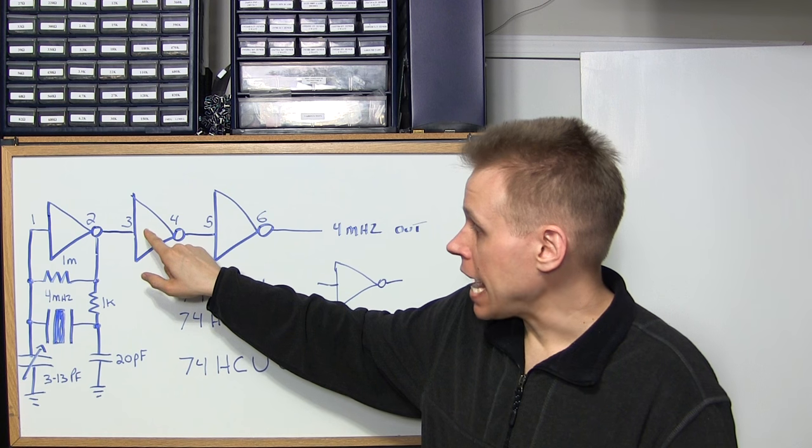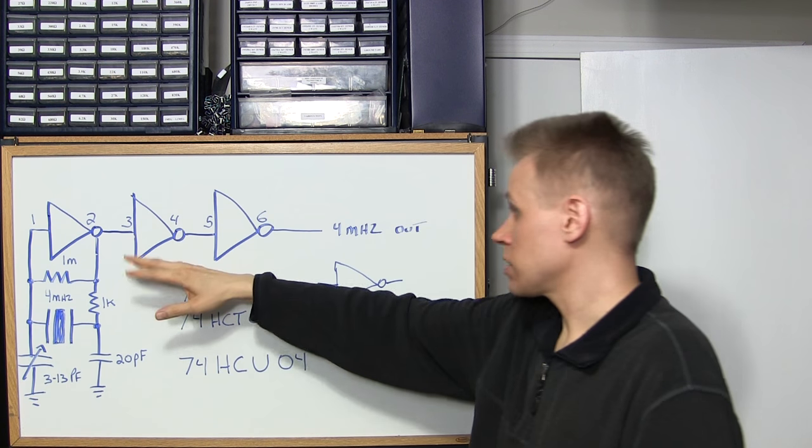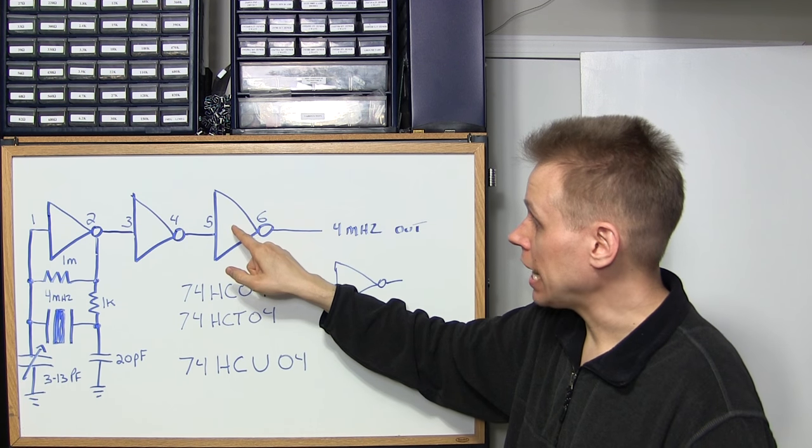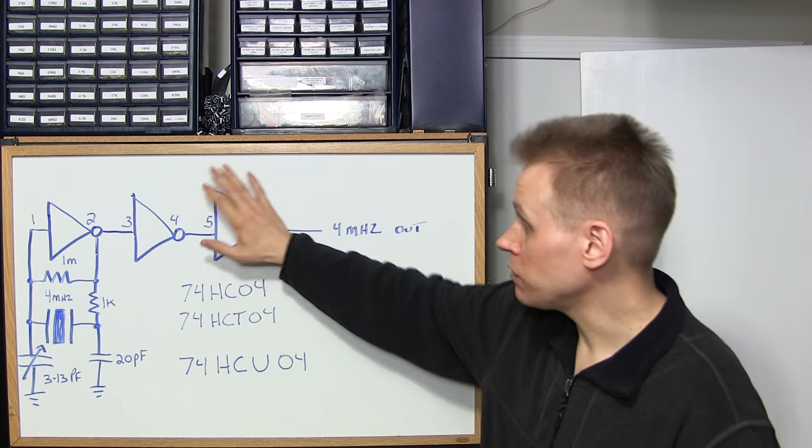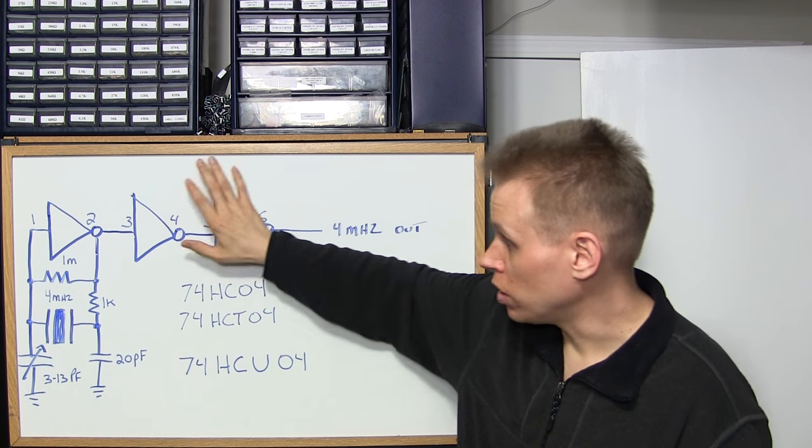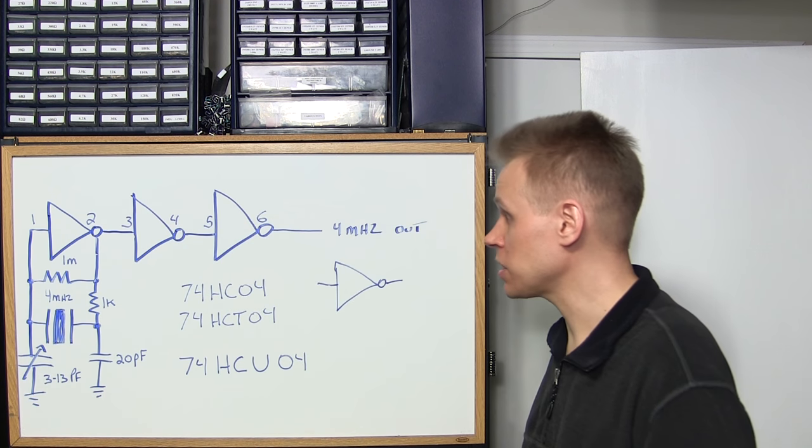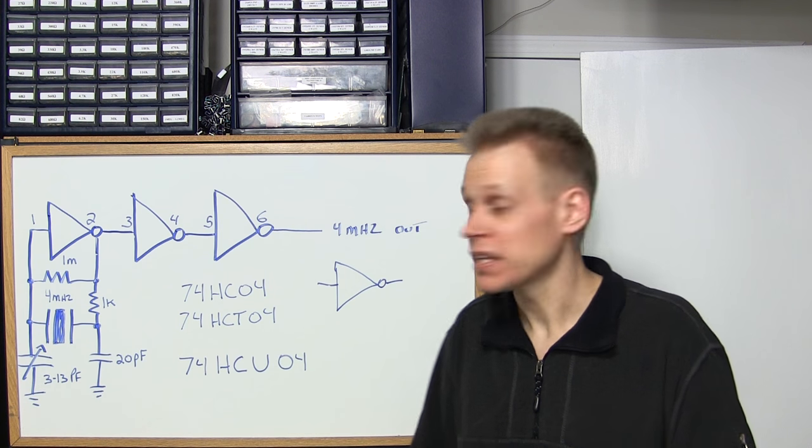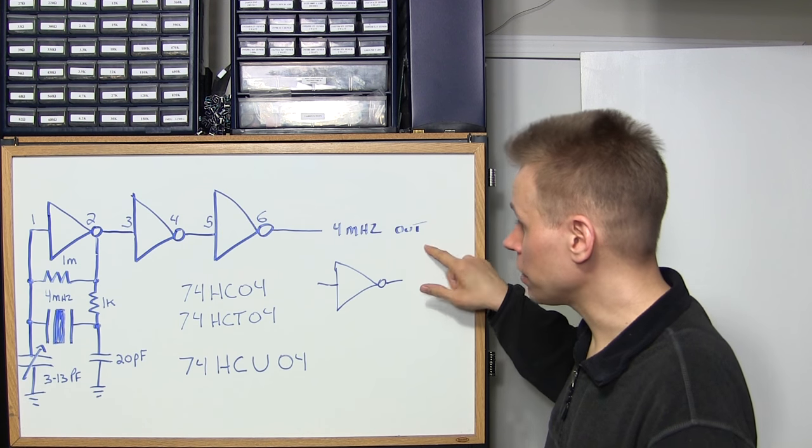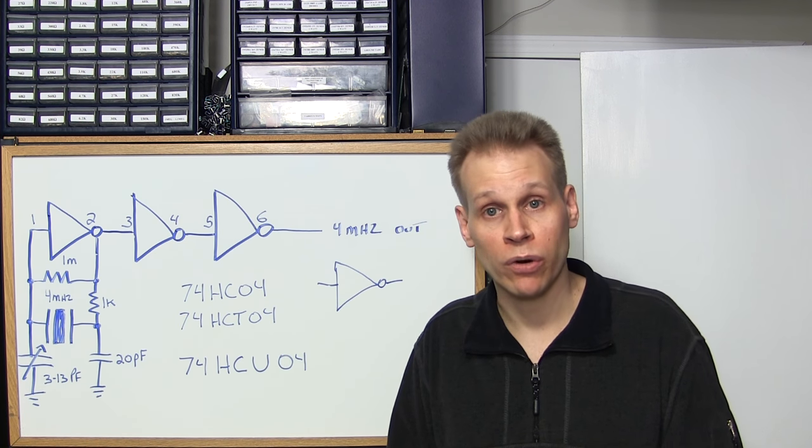Now I have the HC and the HCT04 on hand and they both work very well. If I was to use a higher frequency crystal I would probably switch or just use a different oscillator design. If you have a chance to get the 74HCU, say you don't have any of these ICs and you're going to buy a bunch, I would start with the HCU. Use the unbuffered version for the oscillator.